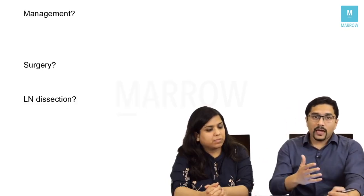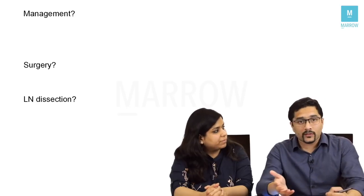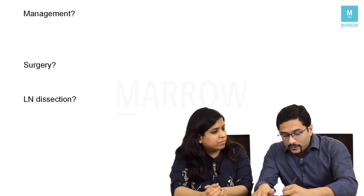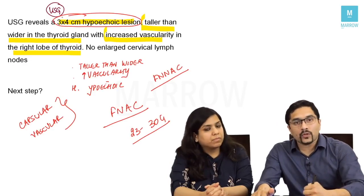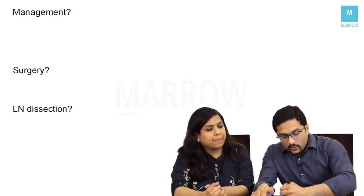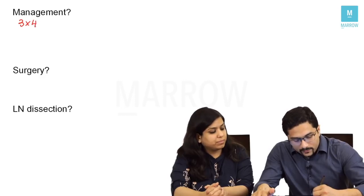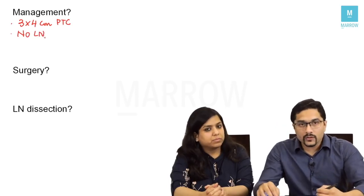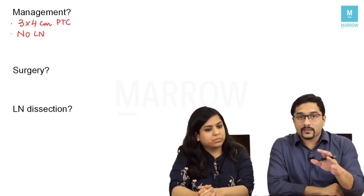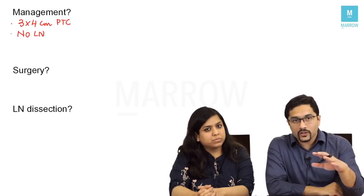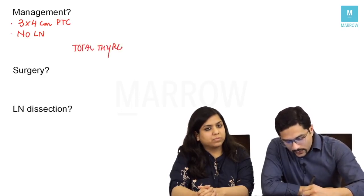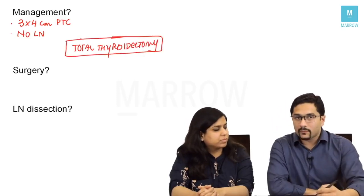The patient returns with a report of papillary thyroid cancer. The swelling was approximately 3 x 4 centimeters in size. Because the lesion is more than 2 centimeters, a hemithyroidectomy is completely ruled out. The treatment here is a total thyroidectomy. For papillary thyroid cancer more than 2 centimeters in size, all patients will get a total thyroidectomy.